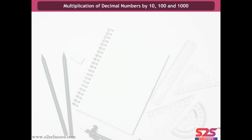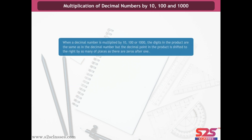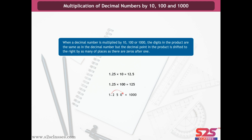Multiplication of decimal numbers by 10, 100 and 1000. For example, 2.36 × 10 = 23.6; and 0.7 × 1000 = 700. When a decimal number is multiplied by 10, 100 or 1000, the digits in the product are the same as in the decimal number, but the decimal point is shifted to the right by as many places as there are zeros after 1. For example: 1.25 × 10 = 12.5; 1.25 × 100 = 125; 1.25 × 1000 = 1250.